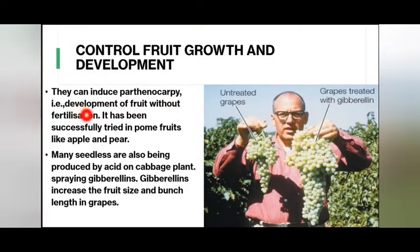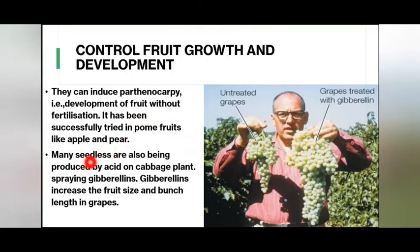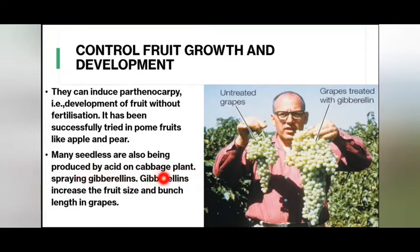Gibberellins control fruit and development — they can induce parthenocarpy, that is development of fruit without fertilization. This has been successfully tried in palm fruits like apple and pear. Many seedless fruits are also being produced by their action. Spraying gibberellins increases the fruit size and bunch length in grapes.